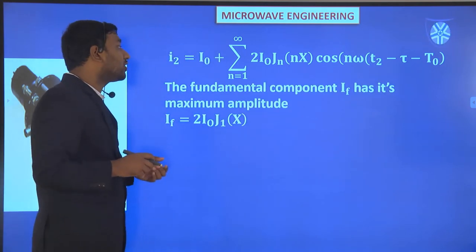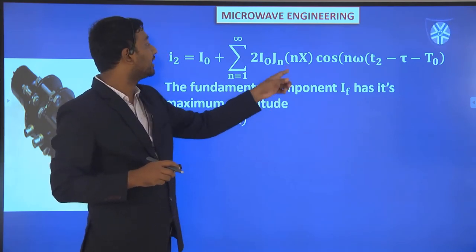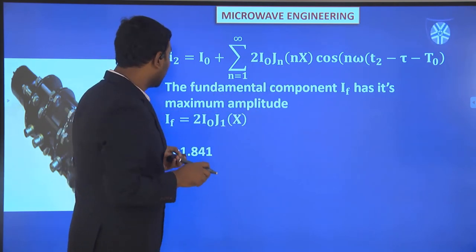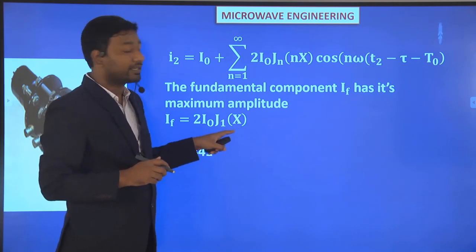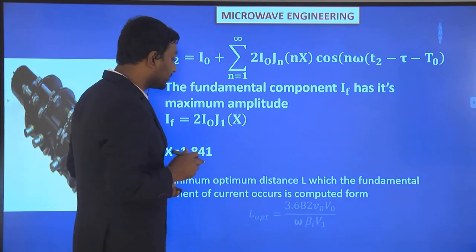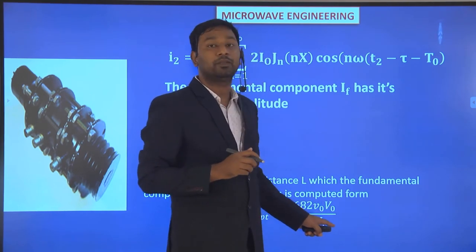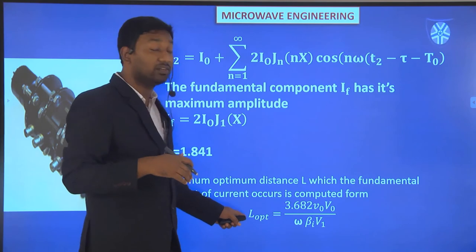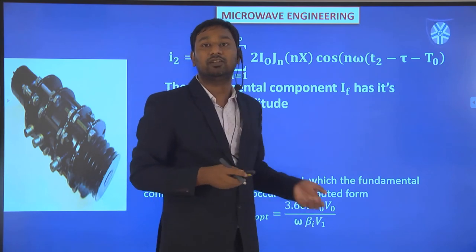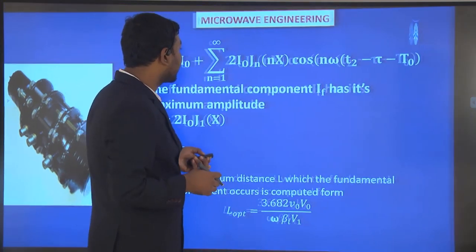The fundamental component (n=1) has its maximum amplitude equal to 2i0·J1(X). The optimum X value from the first-kind Bessel function root is 1.841, and from this the optimum bunching distance is 3.682·V0² / (ω·β_i·V1). This is more accurate than the earlier ΔL calculation since we are not neglecting those terms.